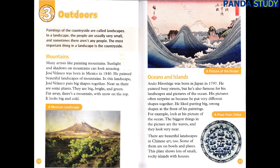Ando Hiroshige was born in Japan in 1797. He painted busy streets, but he's also famous for his landscapes and pictures of the ocean. His pictures often surprise us because he put very different shapes together. He liked putting big, strong shapes at the front of his paintings. For example, look at his picture of the ocean — the biggest things in the picture are the waves, and they look very near. There are beautiful landscapes in Chinese art too. Some of them are on bowls and plates. This plate shows lots of small rocky islands with houses.